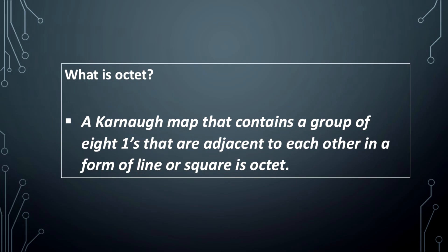What is octet? A Karnaugh map that contains a group of eight ones that are adjacent to each other in a form of line or square is octet.